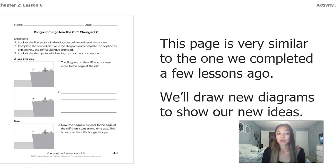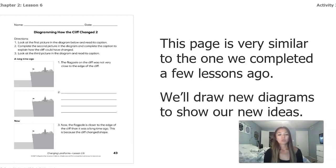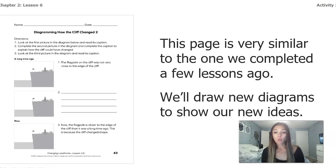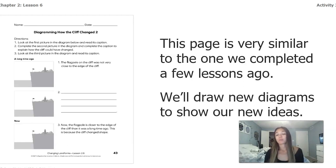This page is similar to the one we completed a few lessons ago, and we're going to draw a new diagram to show our new ideas. The first picture shows the flagpole was not very close to the edge of the cliff. Number two — somewhere between a long time ago and now, something happened; use what you've learned to think about what changed in the middle. Number three — now the flagpole is closer to the edge. Pause the video and complete this diagram in your packet. If you don't have your packet, talk to somebody or think about what could have caused that change.